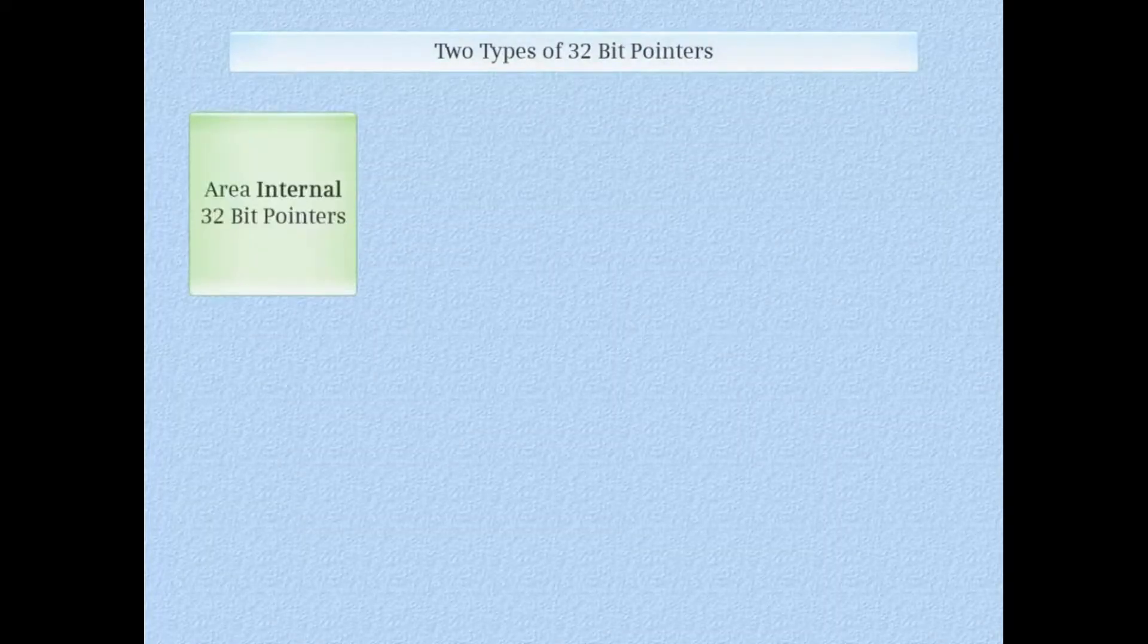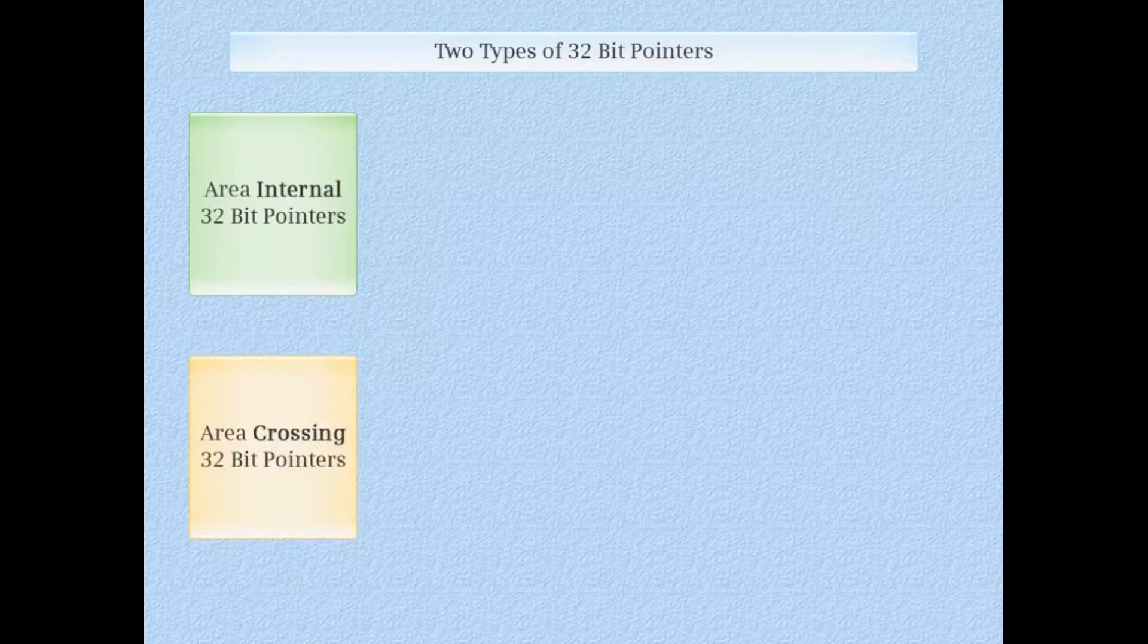There are two types of 32-bit pointers: area internal and area crossing.